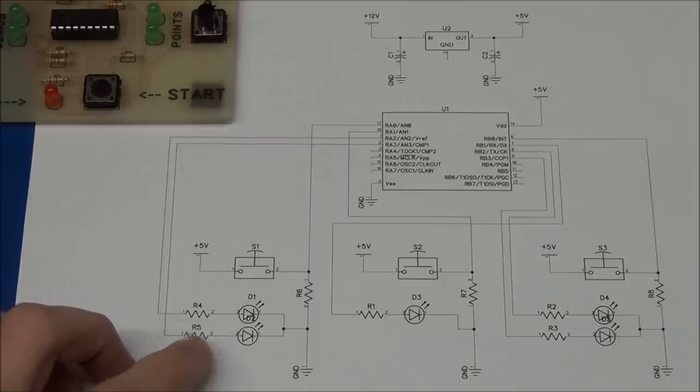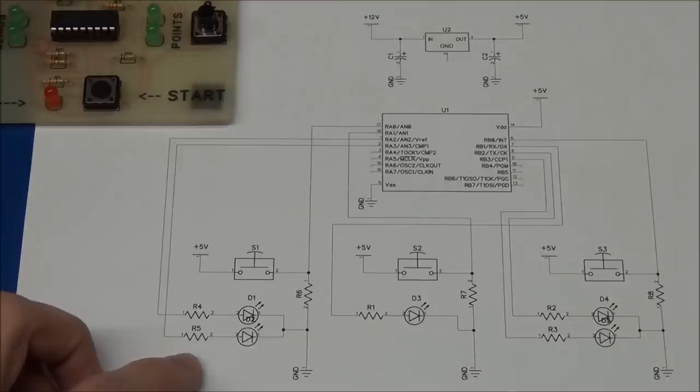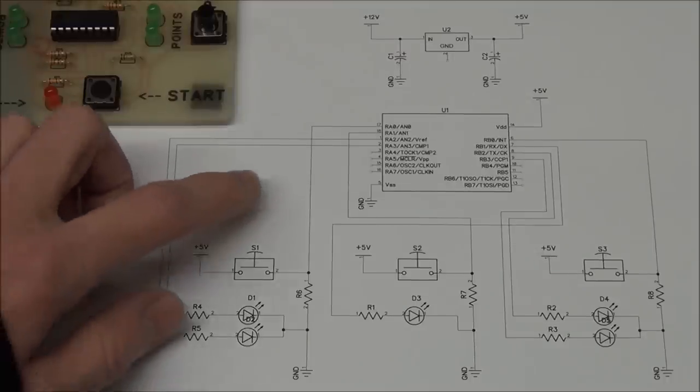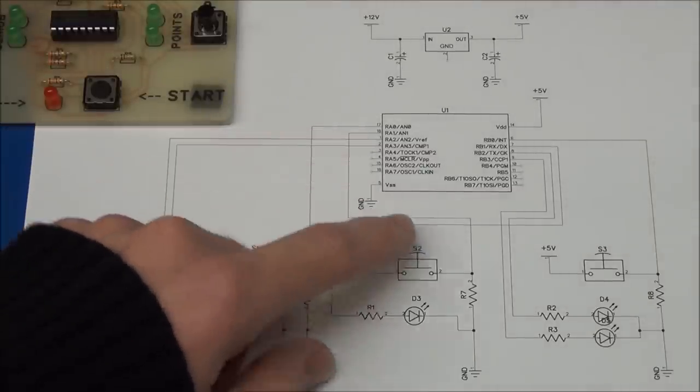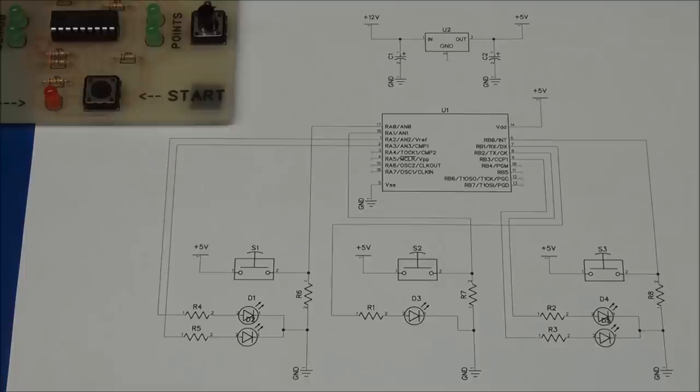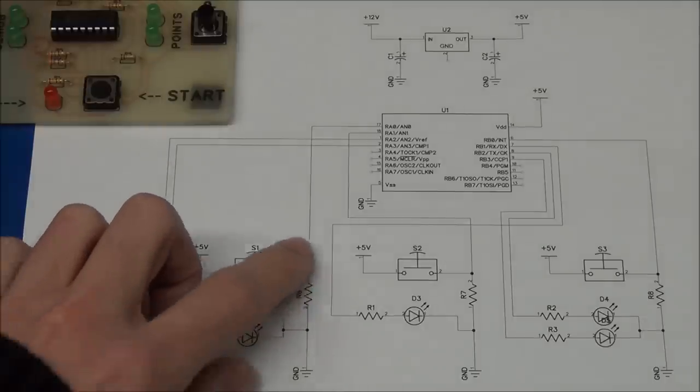And you'll be able to find the values for these on the website as well, but they are not too critical so if you have something close to what I've written you can just use that. It's not really that important. So that was really all for the hardware. You can see that each of these lines go into a separate pin on the microcontroller. And we will take a look at that when we get to the software.